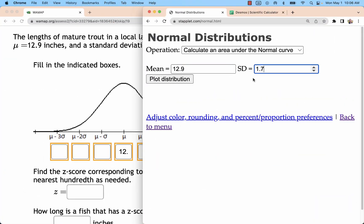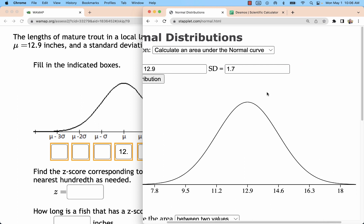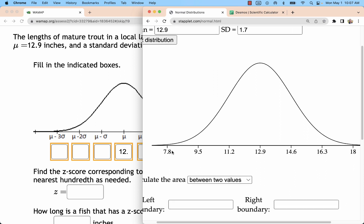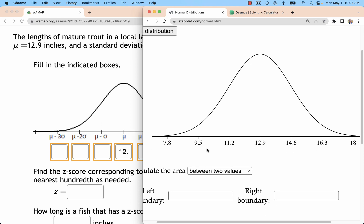12.9 and 1.7 for this distribution, and it will give you those answers: 14.6, 16.3, and 18 going to the right, 11.2, 9.5, and 7.8 to the left.